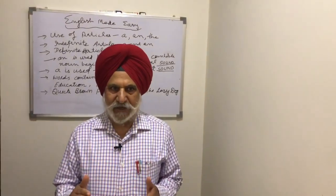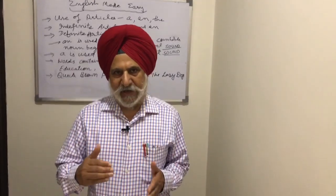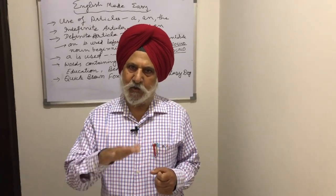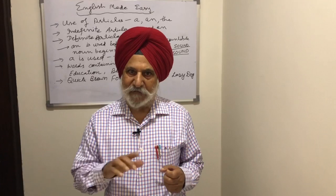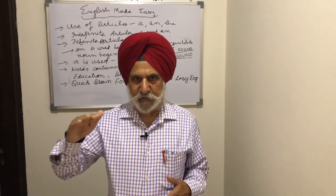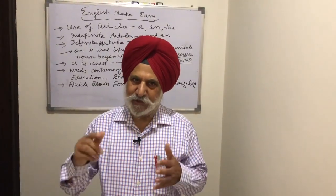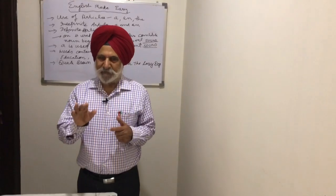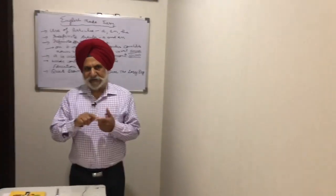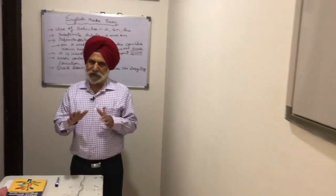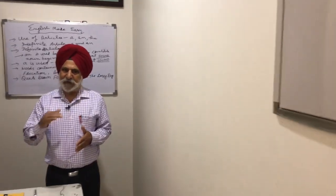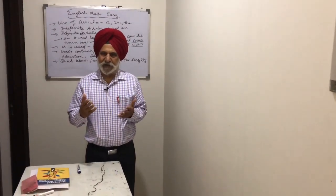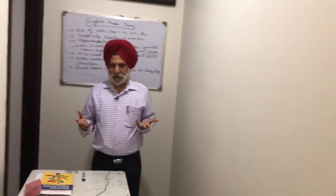ਇੱਕ ਗੱਲ ਹੋਰ ਸਮਝਣ ਵਾਲੀ ਹੈ ਕਿ An ਅਤੇ A ਜੋ ਹਨ, ਇਹ 'one' ਦਾ ਹੀ ਛੋਟਾ ਰੂਪ ਹਨ ਅਤੇ ਉਹੀ ਸੈਂਸ ਦਿੰਦੇ ਨੇ। ਜਦੋਂ ਅਸੀਂ 1, 2, 3 ਬੋਲਦੇ ਹਾਂ ਤਾਂ A 2, 3 ਜਾਂ An 2, 3 ਨਹੀਂ ਕਹਿ ਸਕਦੇ — ਪਰ meaning ਉਹੀ 'one' ਵਾਲੀ ਹੁੰਦੀ ਹੈ। ਇਸੇ ਤਰ੍ਹਾਂ The ਜੋ ਹੈ, ਉਹ this, that, these, those ਦਾ ਛੋਟਾ ਰੂਪ ਮੰਨਿਆ ਜਾਂਦਾ ਹੈ। ਤਾਂ ਅੱਜ ਸਭ ਤੋਂ ਪਹਿਲਾਂ A ਅਤੇ An ਦੀ ਵਰਤੋਂ ਦੇਖਣੀ ਹੈ।